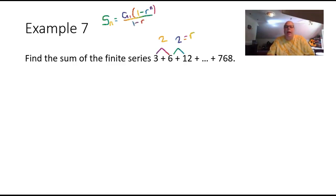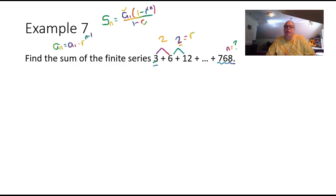To find n, we use the nth term formula: a_n equals a1 times r to the power n minus 1. Our nth term is 768, the first term is 3, and r is 2, so 768 equals 3 times 2 to the power n minus 1. Do not multiply 3 times 2 since 2 has an exponent; instead, divide both sides by 3.